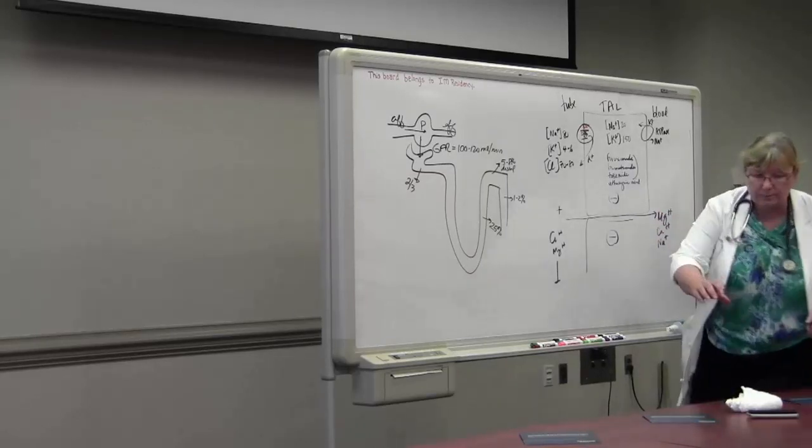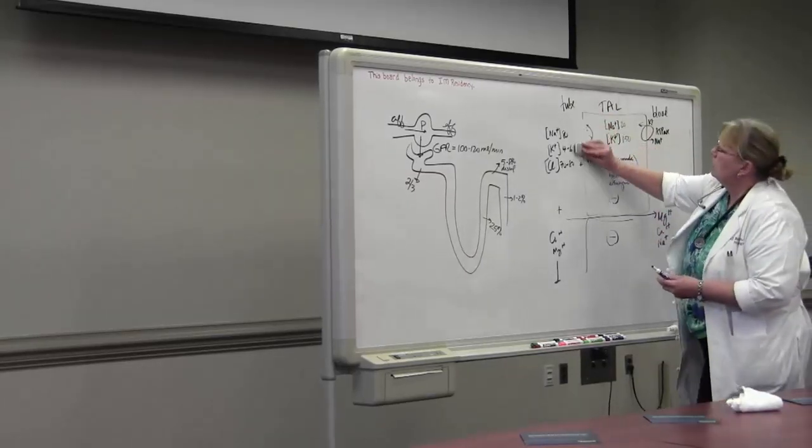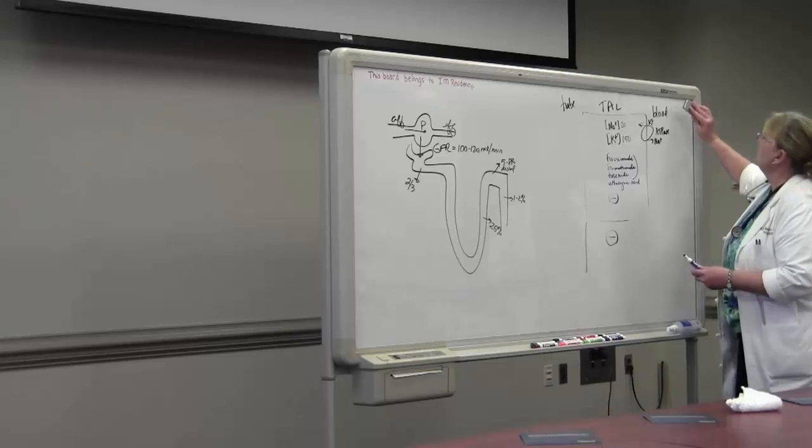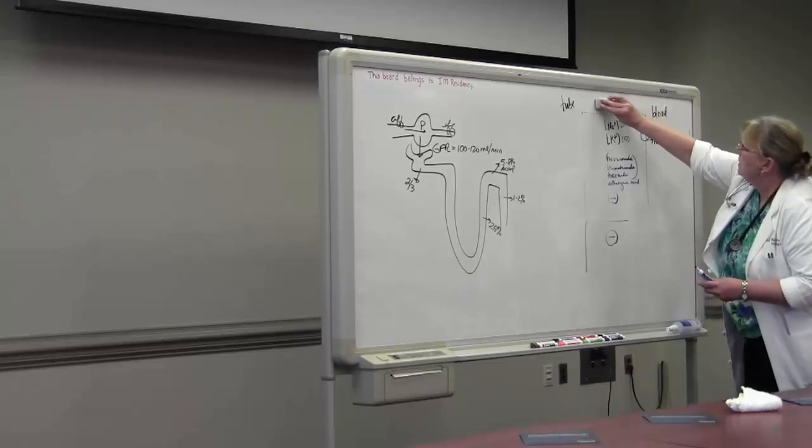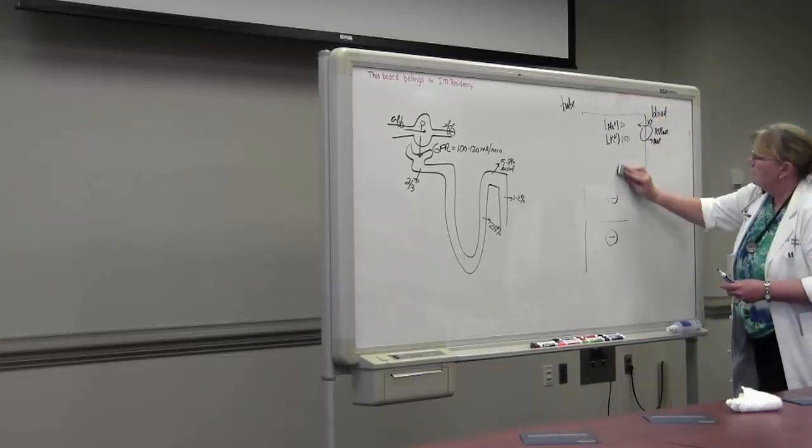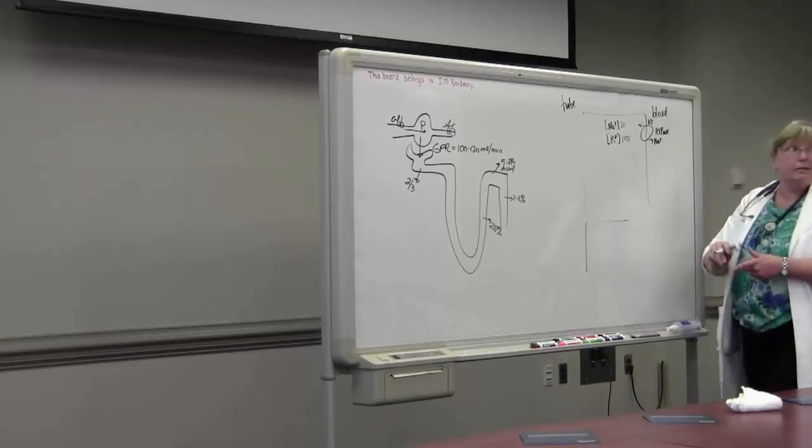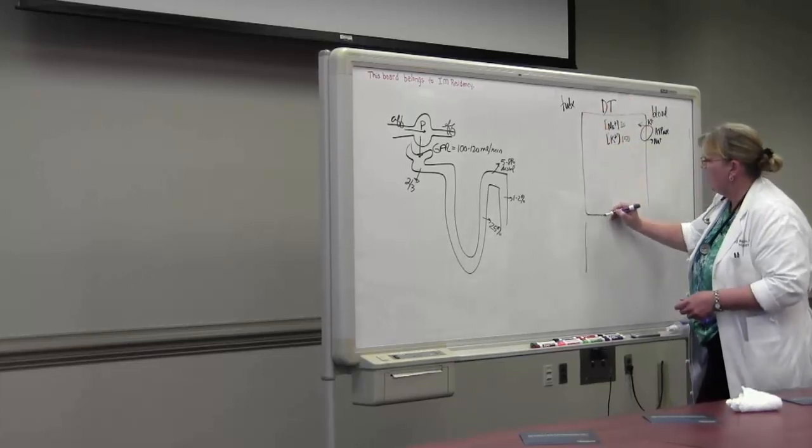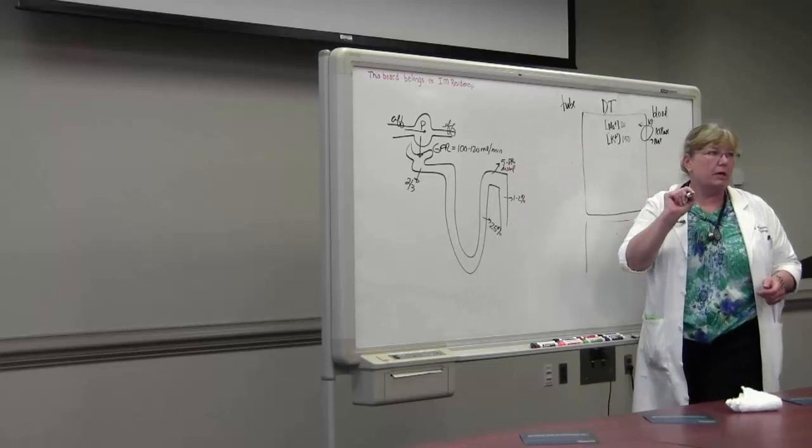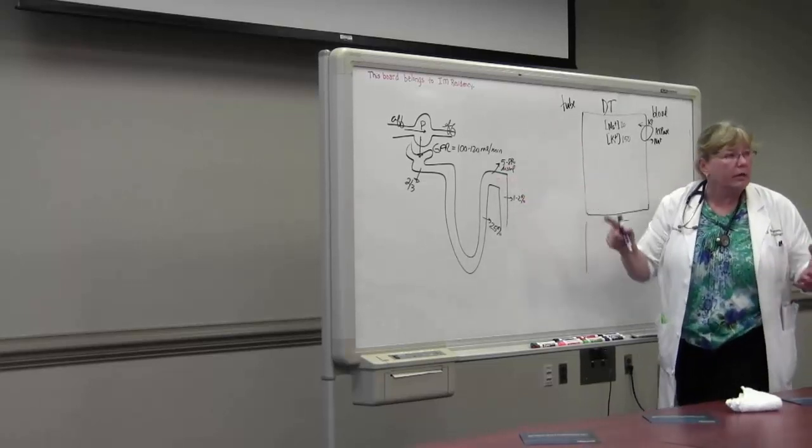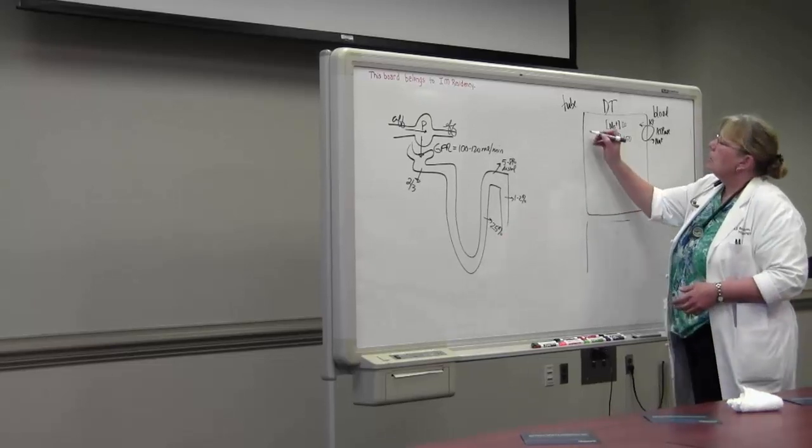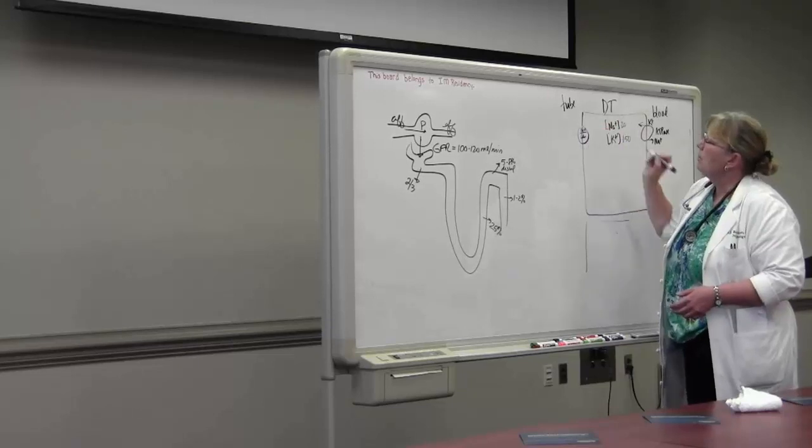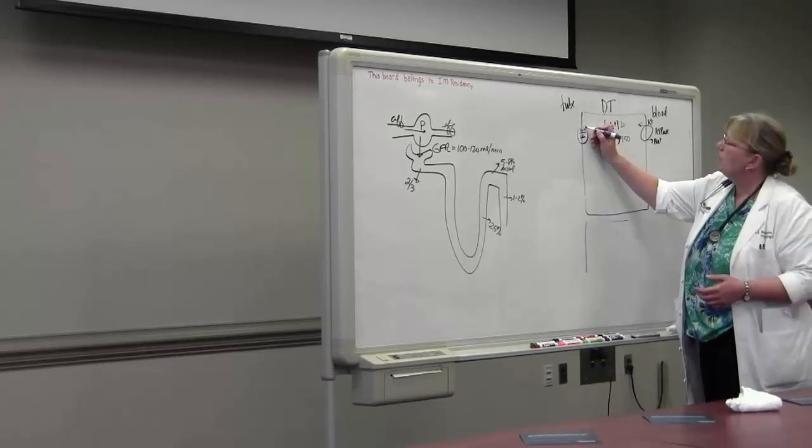On to the distal tubule. So here we are, magically, the distal tubule. And over here, you absorb 5 to 8 percent of your sodium. So the diuretics that work here are not nearly as potent as the loop diuretics. The transporter here is a two-seater. It's sodium, one sodium and one chloride. Again, electrical neutral. So a plus and a minus.